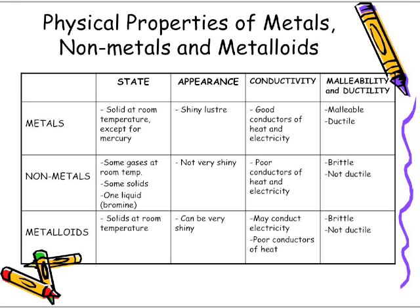Let's look at the properties, physical properties of metals and non-metals and metalloids. In terms of metals, they are solid at room temperature except for mercury. They have a shiny luster appearance. They're good conductors of heat and electricity and they're both malleable and ductile. Malleable meaning you have the ability to bend it. Ductility or ductile meaning that you can stretch it into a wire.